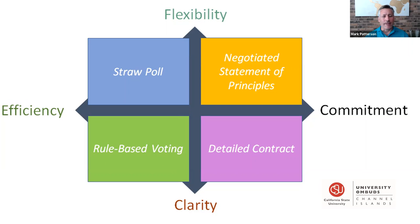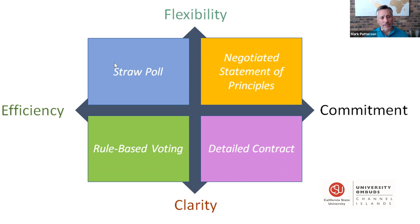Here you can see two different axes: efficiency versus commitment, and clarity versus flexibility. As you look up and down these charts, as you gain clarity, you're in many cases going to have to give up some level of flexibility. And as you gain commitment by the parties, there is going to be some necessity of conceding efficiency or prompt decision-making. I like the analogy from the business world: you can have price, quality, or speed, but not all three at the same time — choose two.